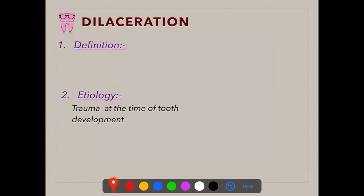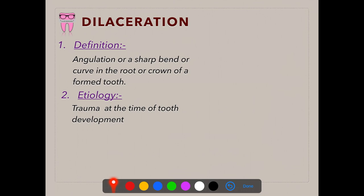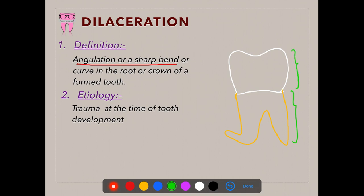Coming to the fourth developmental disturbance affecting the shape of the tooth — dilaceration. Dilaceration is defined as an angulation or a sharp bend or curve in the root or crown of a formed tooth. The etiology is trauma at the time of tooth development. Dilaceration can occur anywhere along the length of the tooth depending on how much the crown or root was completed at the time of trauma. It is an important consideration during extraction.